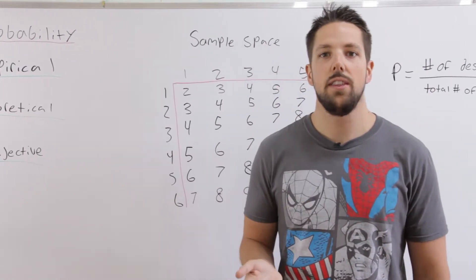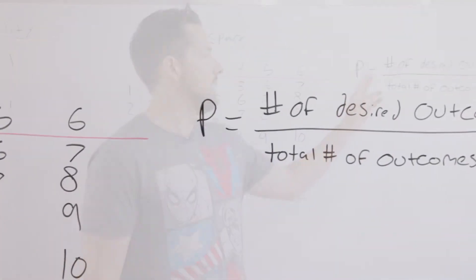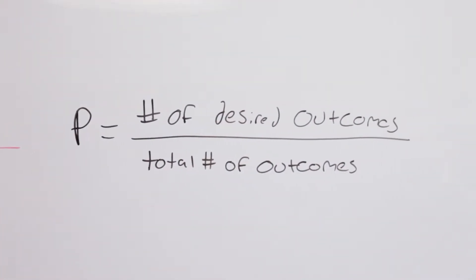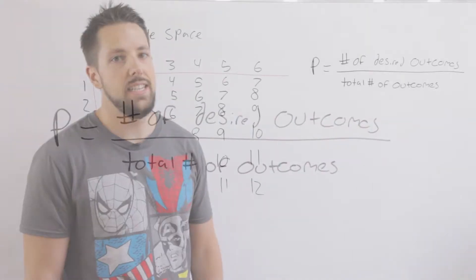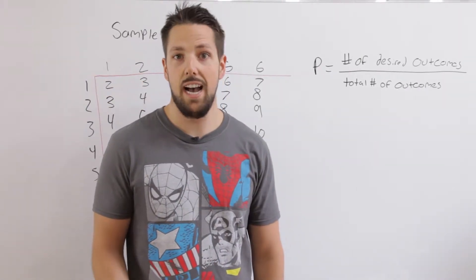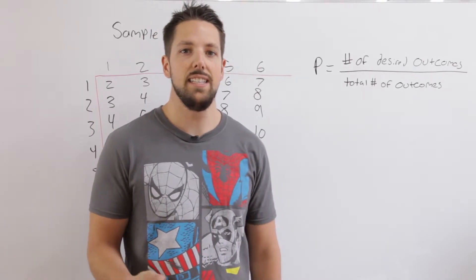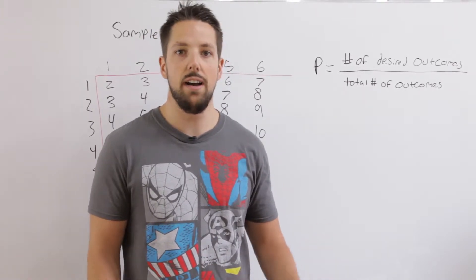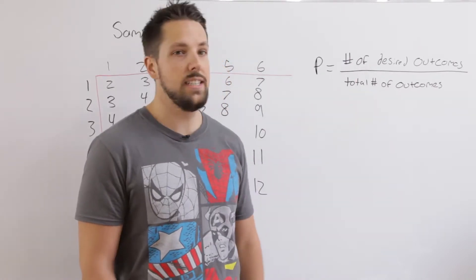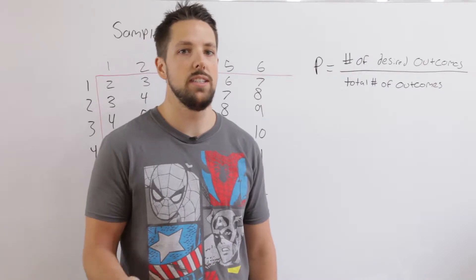The formula for theoretical probability is the number of desired outcomes divided by the total number of outcomes. So if we're looking for the probability of rolling a one when we roll a die, the total number of outcomes is six — one, two, three, four, five, or six. And the number of desired outcomes is one. So the probability is one over six.